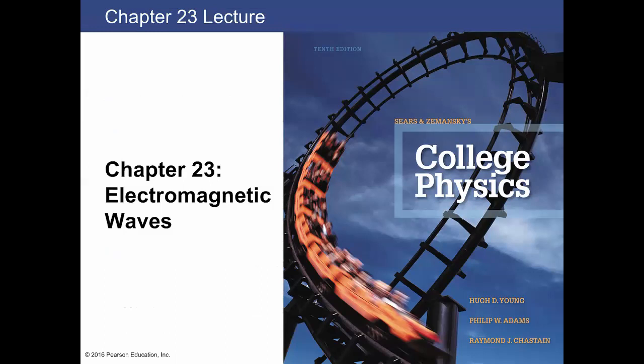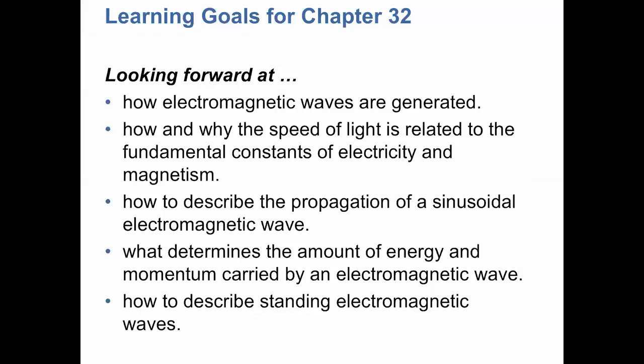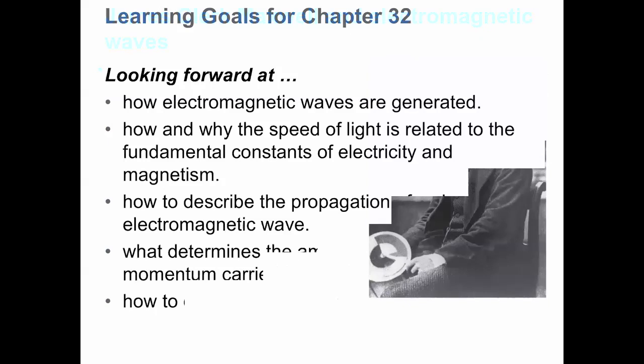We have Chapter 23 here today on electromagnetic waves. We're going to talk about what electromagnetic waves are, how they're related to light, and how we can use that concept to relate electricity and magnetism together in what we call Maxwell's equations. We'll also see some wave properties, the energy associated with those waves, and look at how that leads into the next few chapters on optics.